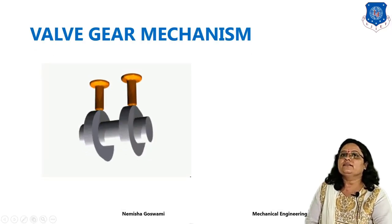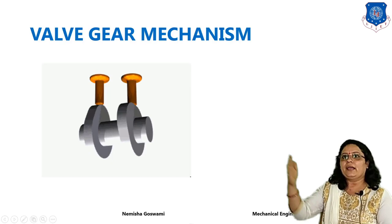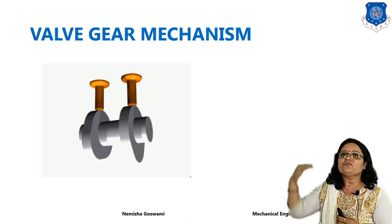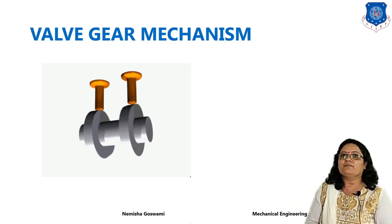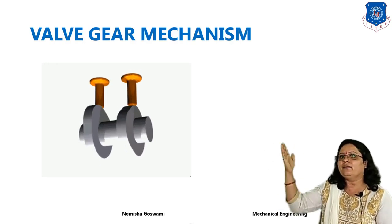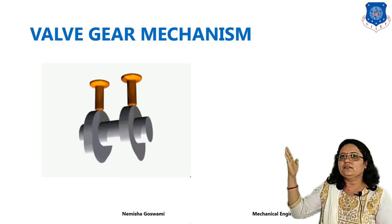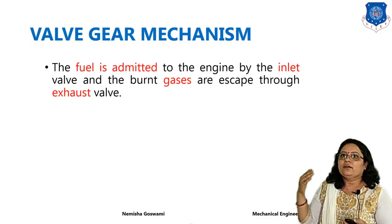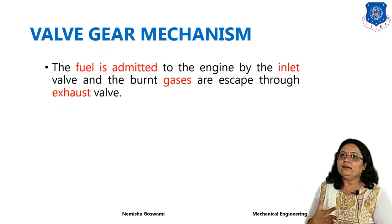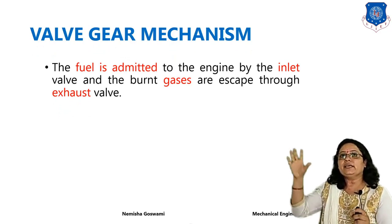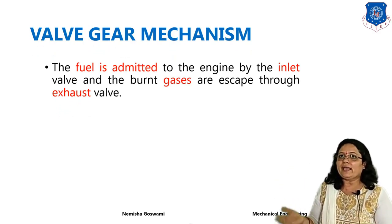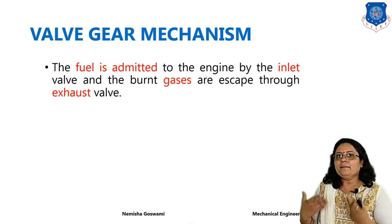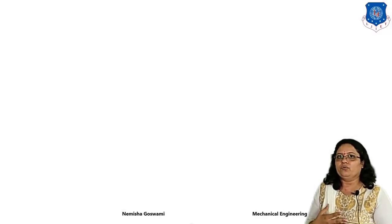An example of a cam and follower mechanism has been provided to show how the cam rotates and how the follower follows the motion of the cam — this can be clearly understood using the animation. The fuel is admitted to the engine through the inlet valve, and gases escape through the exhaust valve.